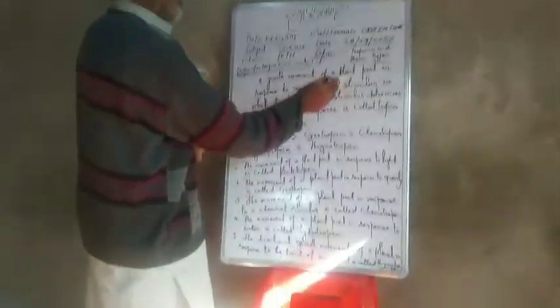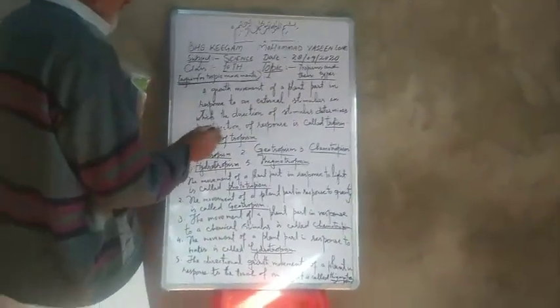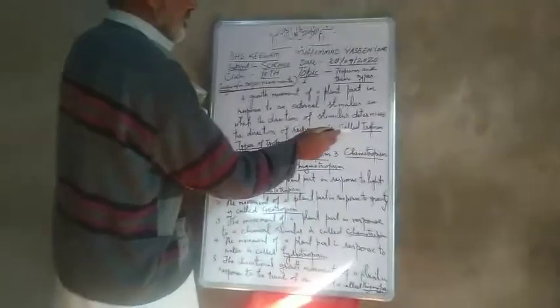Today our topic is tropism and their types. What is tropism? A growth movement of a plant part in response to an external stimulus, in which the direction of the stimulus determines the direction of the response, is called tropism or tropic movement.